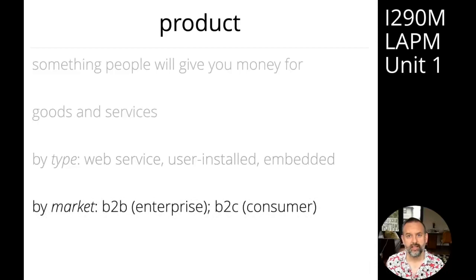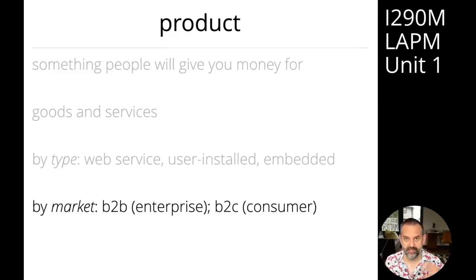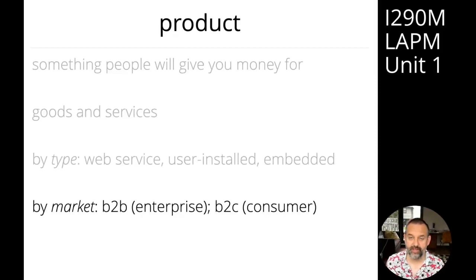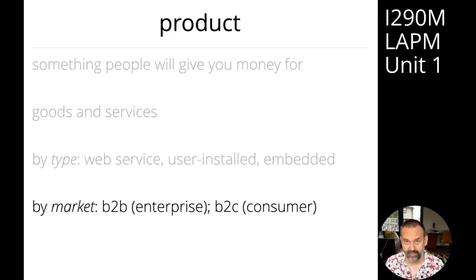We can also divide up products based on the market. B2B software — business-to-business — is software that's marketed to enterprises and organizations directly. B2C — business-to-consumer — covers consumer-oriented products where we sell directly to end users or consumers, members of the general public. We can also divide up software based on lifecycle stage.